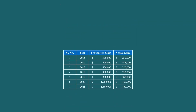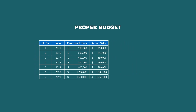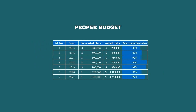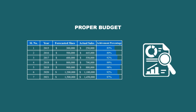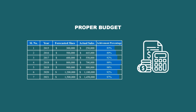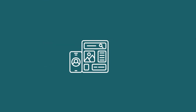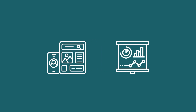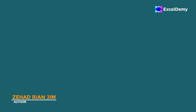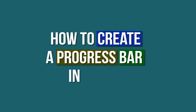Hello everyone. If you want a proper budget or financial plan, you can use a progress bar to show how much of the budget has been allocated or spent. It gives you a quick overview of your financial progress and helps you stay within the budget limit. Overall, the use of progress bars in Excel enhances user experience and provides visual feedback on progress. This is Jihadri Anjim from Excel Demi, and today we will learn several methods on how to create a progress bar in Excel.